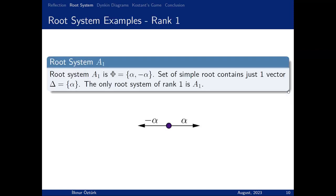Let's start with a simple example, rank one. Rank one means n equals one, which means there is just one simple root. Let's call it alpha. We know that if alpha is here, minus alpha must be here. So A1, the root system A1, just has alpha and minus alpha.